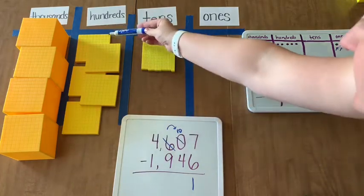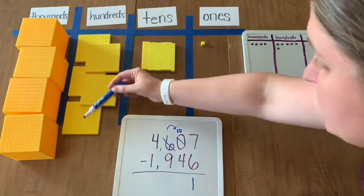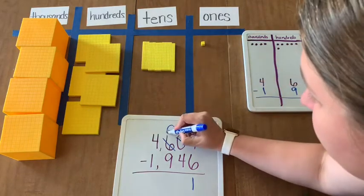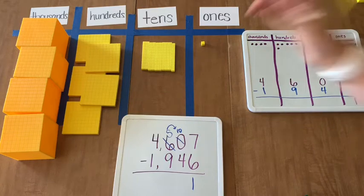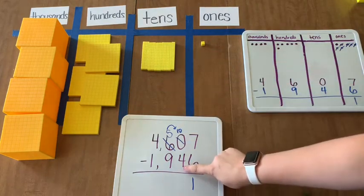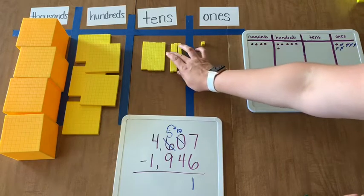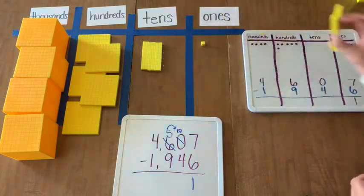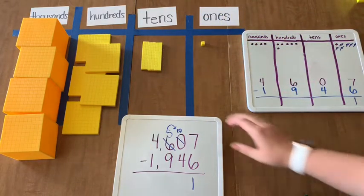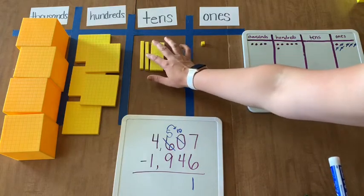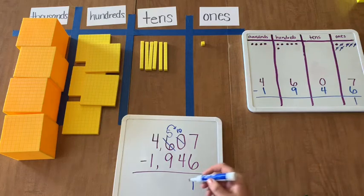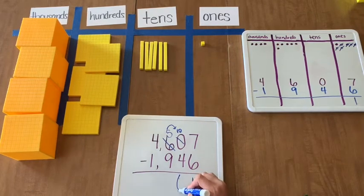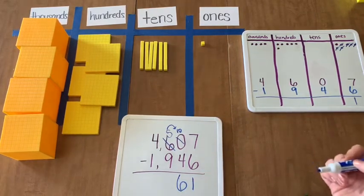What that looks like when we regroup in standard algorithm is I take, we had 6 hundreds, I take one of them and I break it down into 10 tens. Now I have 100, 200, 300, 400, 5 hundreds left. With my 10 tens, I can now subtract 4 tens. 1, 2, 3, 4 tens. I have 1, 2, 3, 4, 5, 6 tens left. So 6 tens left.